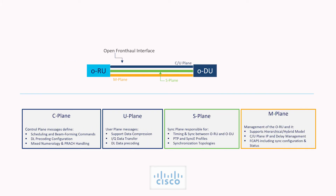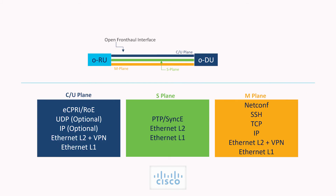Now that we have a decent idea about the fronthaul split implementation, let us understand what is carried in this fronthaul interface. At a high level, the control plane, user plane, management plane and synchronization plane are the essential ingredients. The control, user and synchronization planes are essentially Layer 2, while the management plane can be implemented with either IPv4 or IPv6. To carry C/U/S plane traffic on the fronthaul network, you can use a Layer 2 service like L2VPN-VPWS or EVPN-VPWS.